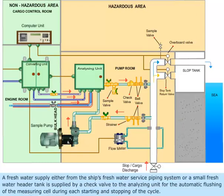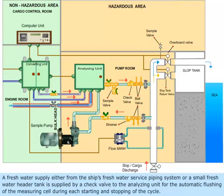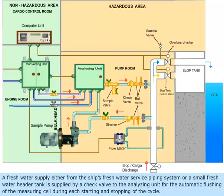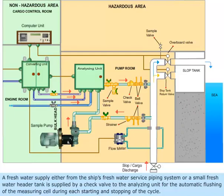Piping for cleaning liquid, flushing water, and cable inlets for the intrinsically safe power supply and measuring signals are also included. A fresh water supply, either from the ship's fresh water service piping system or a small fresh water header tank, is supplied by a check valve to the analyzing unit for the automatic flushing of the measuring cell during each starting and stopping of the cycle.